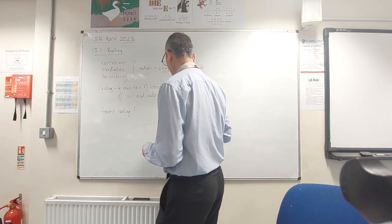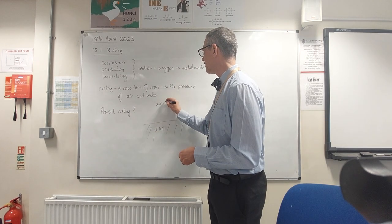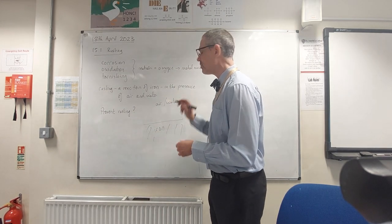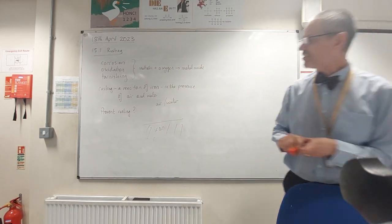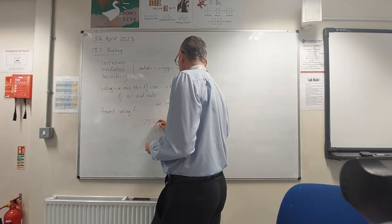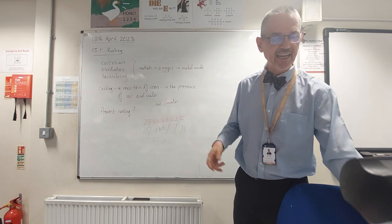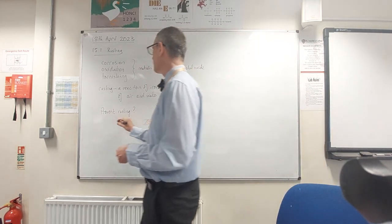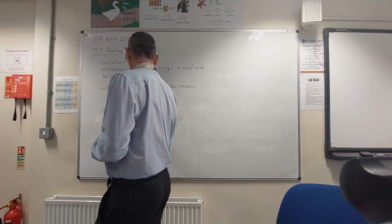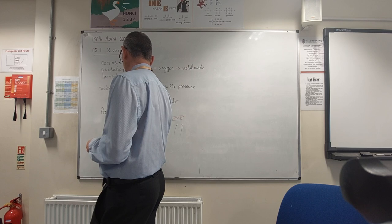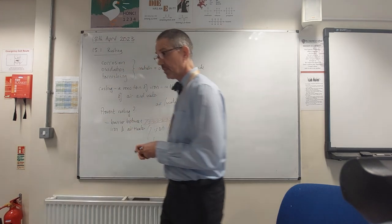So how do we go about preventing rusting? To prevent rusting, we've got our piece of iron, and we've got air and water vapor in the air. What we need to do is put a barrier between the iron and the air and water, so the air and water can't get to the surface of the iron. That's the simplest way to prevent rusting.